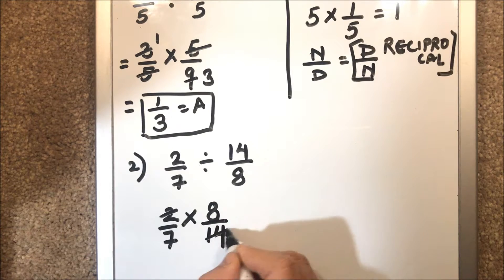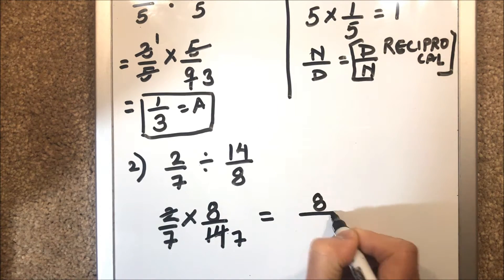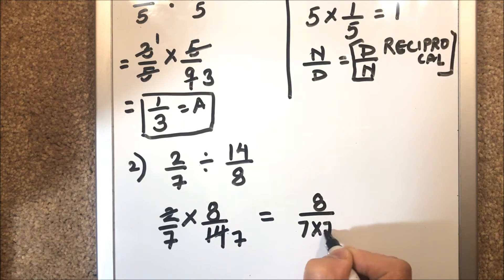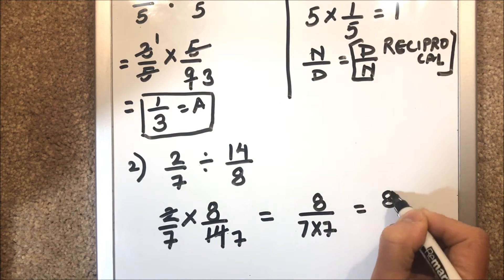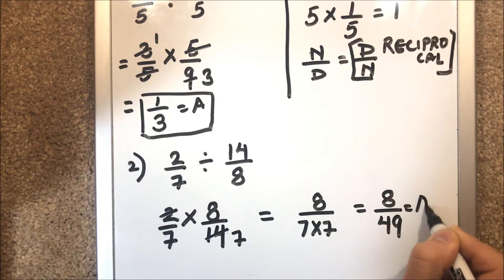2 times 1 and 2 times 7. This will be 8 and this will be 7 times 7, so this is 8 over 49. This is our answer.